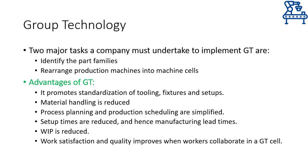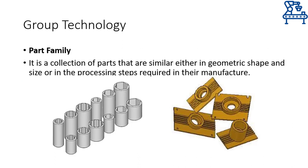Grouping of machines allows for easy maintenance and standardization of tooling, fixtures, and other setups for a particular machine cell. A non-tangible advantage of group technology comes from the fact that workers working in a machine cell will collaborate with each other, and higher worker satisfaction is achieved because of reduced work handling and working in the vicinity of their peers. So, I have used the term part family quite a few times but haven't formally defined what it means.